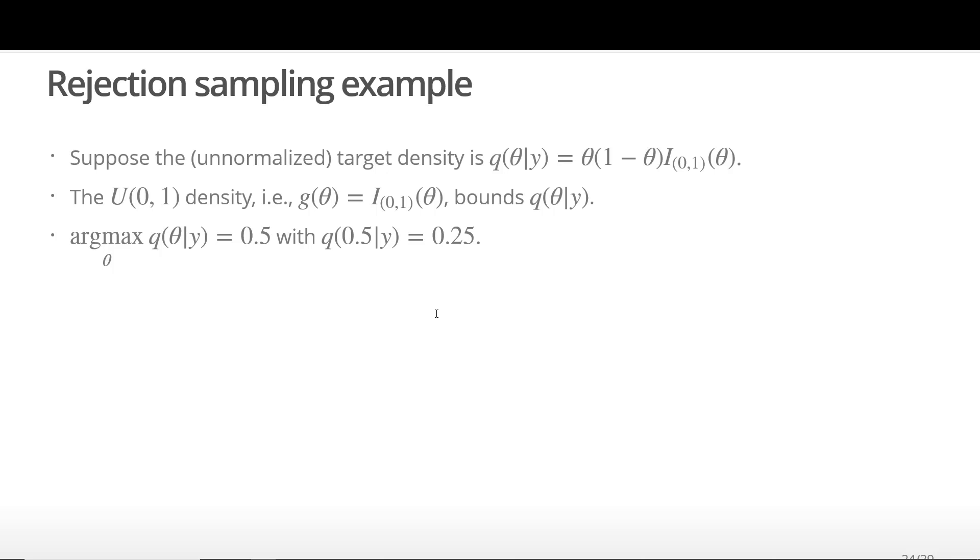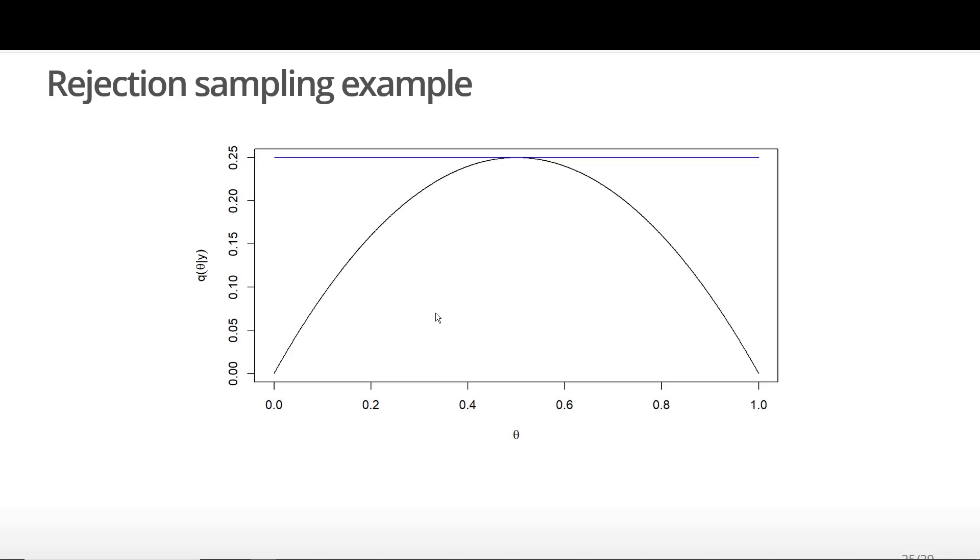The mode of the target density occurs at 0.5 and the peak of the mode occurs at 0.25. Thus, we pick our bounding constant M to be equal to 0.25. The following graphic displays the target density Q in black and the bounding function M times G in blue. We chose the bounding function M times G to intersect the target density at a single point.